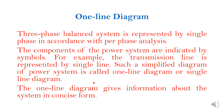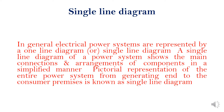In the power system there are big components like a generator, so if we draw the same components on paper for analysis purposes, it is too difficult or too complicated. So in order to avoid this, we have to use a symbol for each component. The one-line diagram gives information about the system in concise form. The general electrical power system is represented by the one-line or single-line diagram. A single-line diagram of a power system shows the main connections and arrangement of components in a simplified manner.